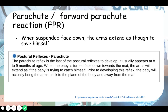Prior to the full parachute reflex developing, there is actually a partial reflex that is not yet complete, where the baby will extend the arms but then bring them back to the plane of the body, rather than fully extending to protect against a fall.